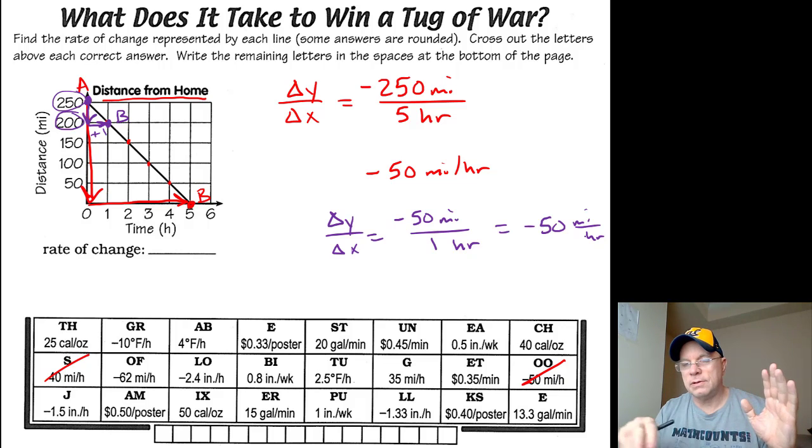That ratio of the change in y over the change in x will be constant. It will always give you the same rate. That's what makes it a line, actually.